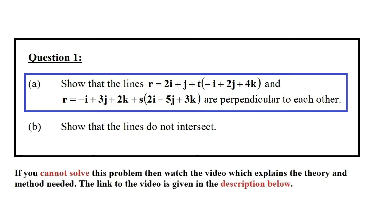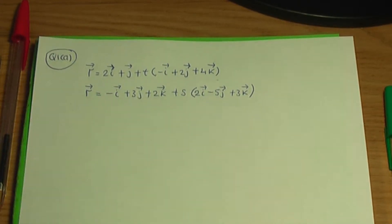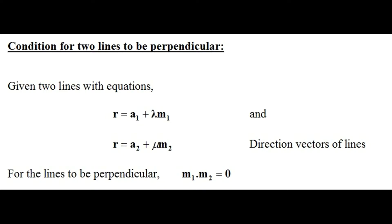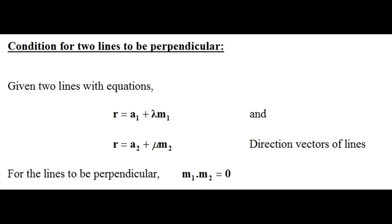So let's think about this question. We have the vector equations of these lines given as part of the question. Now remember the condition for when two lines are perpendicular. If you're given two lines with equations r = a1 + λm1 and r = a2 + μm2, we look at the direction vectors m1 and m2. If the dot or scalar product of the direction vectors equals zero, then the lines are perpendicular.